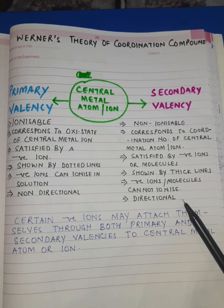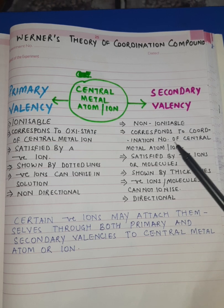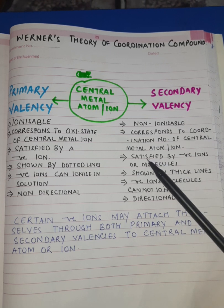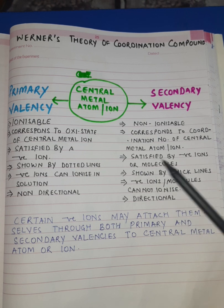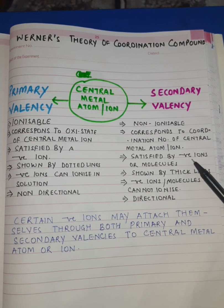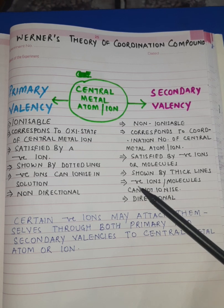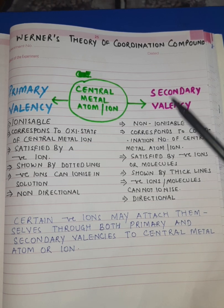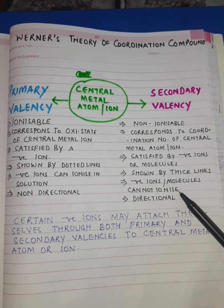These primary valencies are always non-directional. On the other hand, secondary valency is non-ionizable. It corresponds to the coordination number of the central metal atom or ion. It can be satisfied by negative ions as well as by neutral molecules. It is shown by thick lines, and the negative ions or molecules attached by secondary valency to the central metal atom or ion cannot ionize. These valencies are directional.